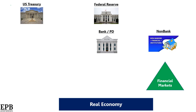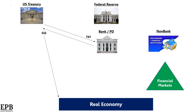To start, the Treasury sells debt to the public, not directly to the Federal Reserve. In return, the Treasury gets cash, which they then spend into the real economy. The biggest expenditures of the government being Social Security, Medicare, Medicaid, defense, things like that.